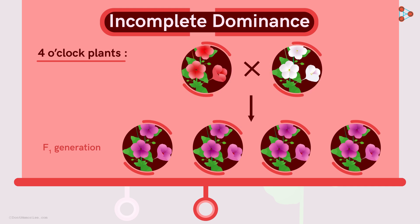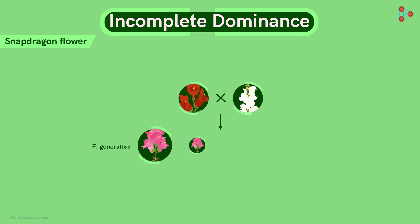So when the alleles are expressed in the offsprings, they give an effect which is like a blend of both. This is the reason why we get pink flowers. This same feature is seen in a snapdragon flower. A red variety crossed with a white variety gives us pink flowers.